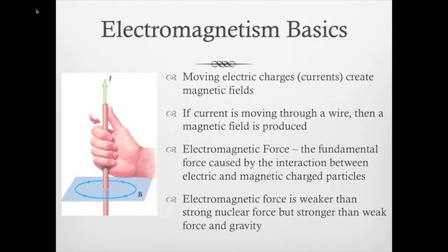Next we're going to look at some electromagnetism basics. So moving electric charges or currents create magnetic fields. If the current is moving through wire, a magnetic field is going to be produced. So therefore an electromagnetic force is the fundamental force caused by the interaction between electric and magnetic charge particles. Something to keep in mind is that electromagnetic force is weaker than strong nuclear force, but stronger than weak force, and it's also stronger than gravity. There is a misconception that gravity is a very strong force. That is not true. If gravity was a very strong force, we would all be puddles of nothing in the center of Earth because we wouldn't be able to move. Gravity is the weakest of the forces. You are able to oppose it, you are able to move with it, walk around within it, move around in it. So gravity is actually a very weak force.